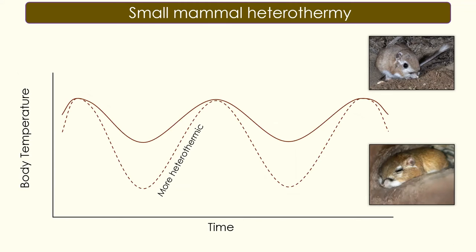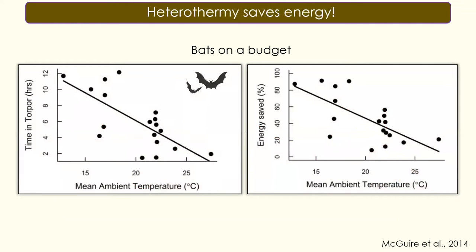We know that heterothermia saves energy. A 2014 study on bats showed that during colder ambient temperatures, bats go into torpor much more frequently — torpor being a more pronounced version of that hypothermia. Researchers used flow-through respirometry on each individual bat to develop an energy budget, and found that in lower mean ambient temperatures, when animals were going into torpor more often, they were saving up to 91 percent of available energy compared to when they were in flight.